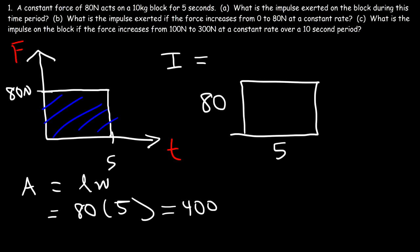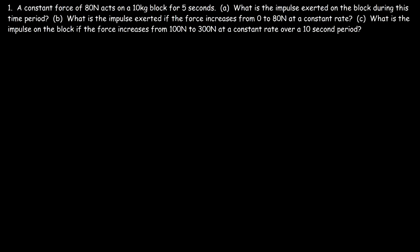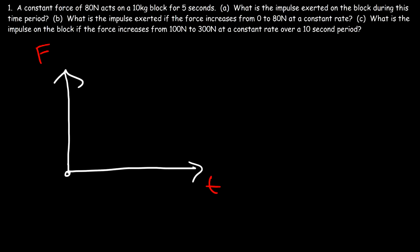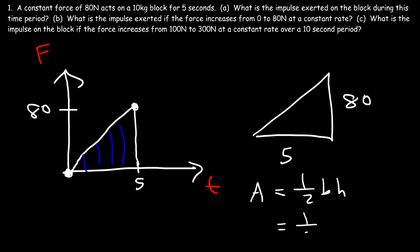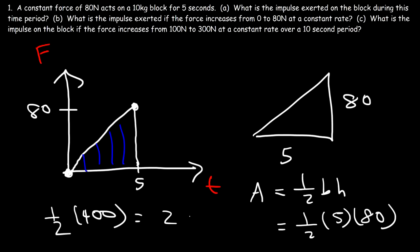Anytime you have a variable force, to calculate the impulse you need to find the area under the curve. For Part B, the force changes from 0 to 80 newtons in 5 seconds, increasing at a constant rate, so we draw a straight line and find the area of a triangle. The base is 5 and the height is 80, so using area = ½ × base × height: ½ × 5 × 80 = 200 newton-seconds.